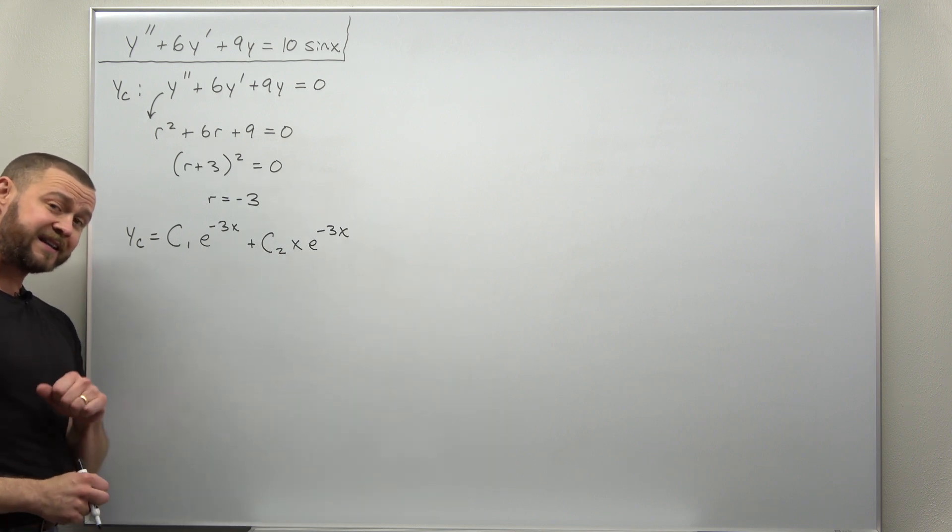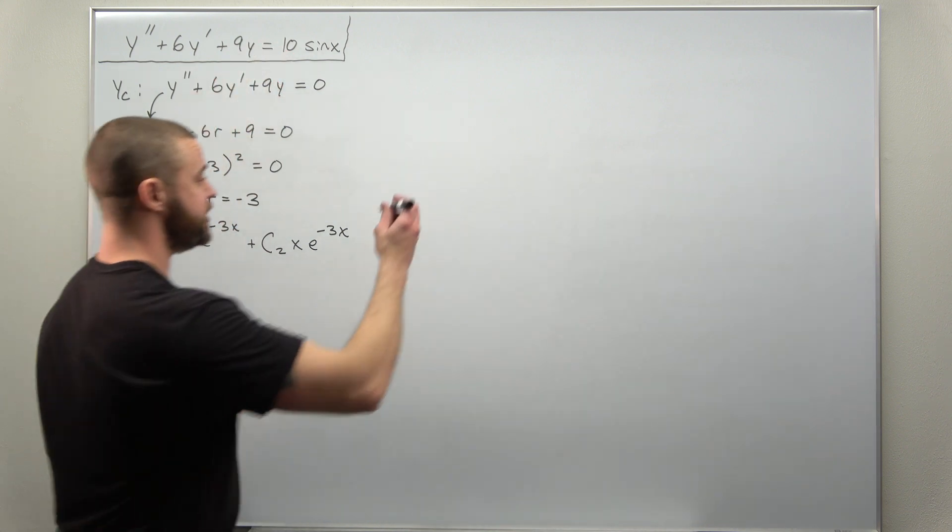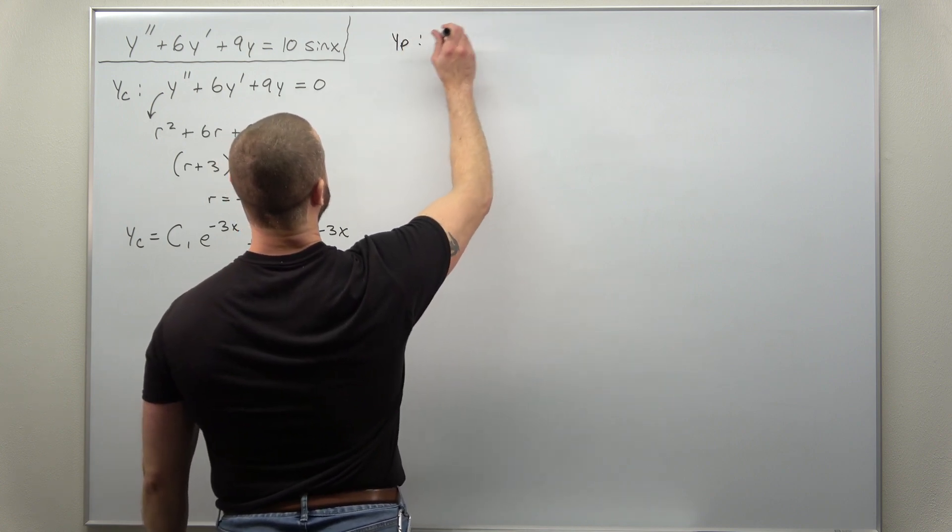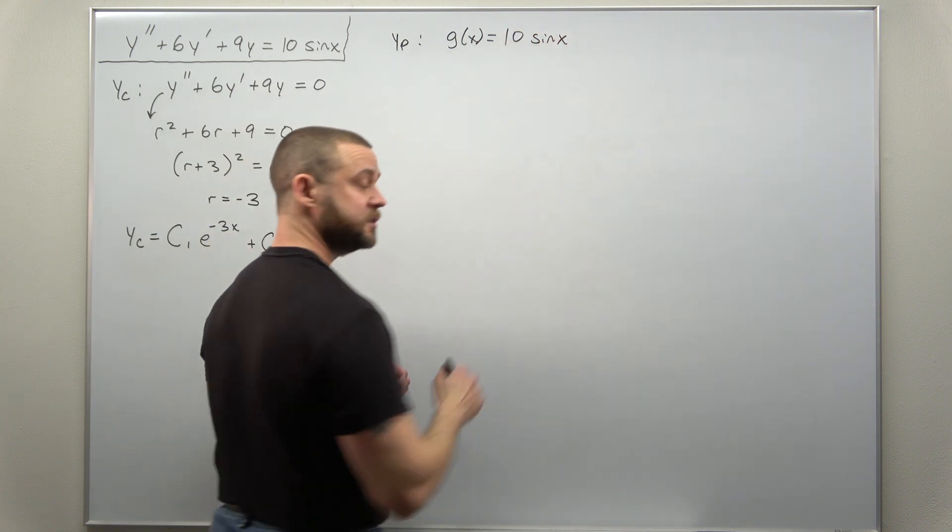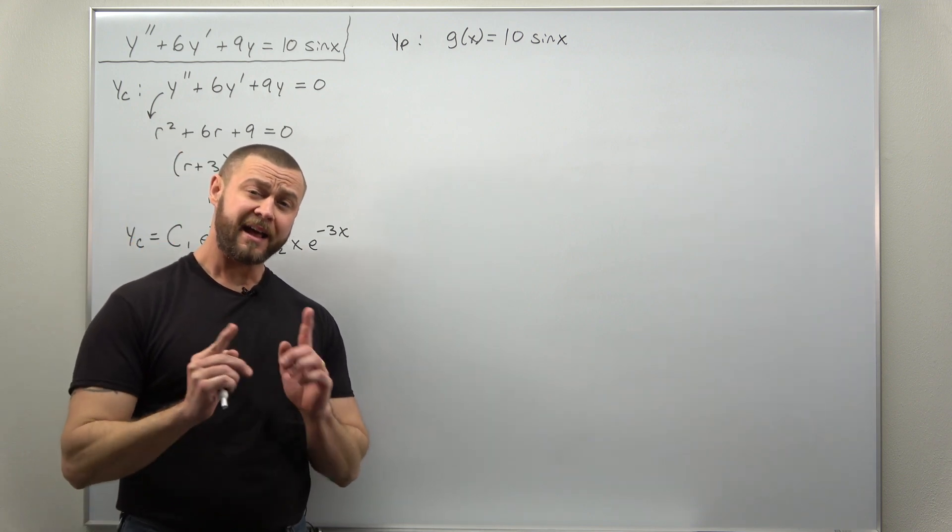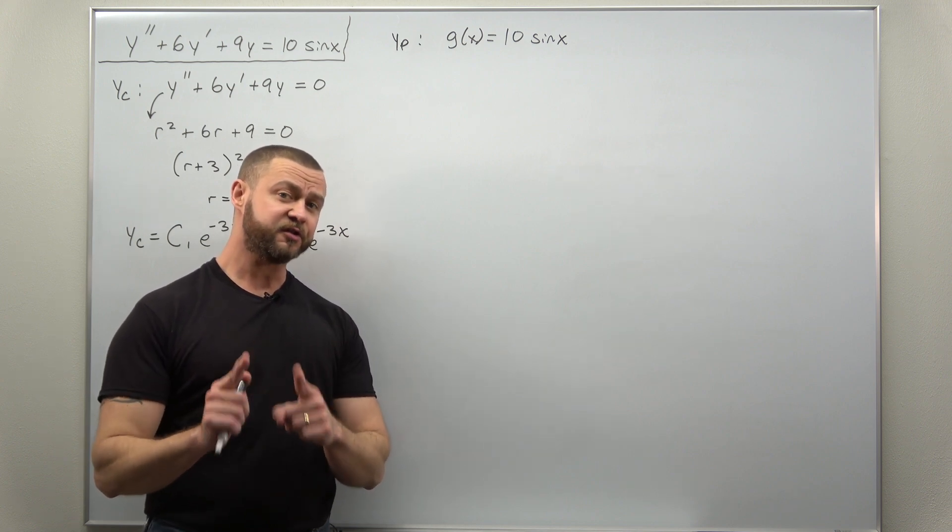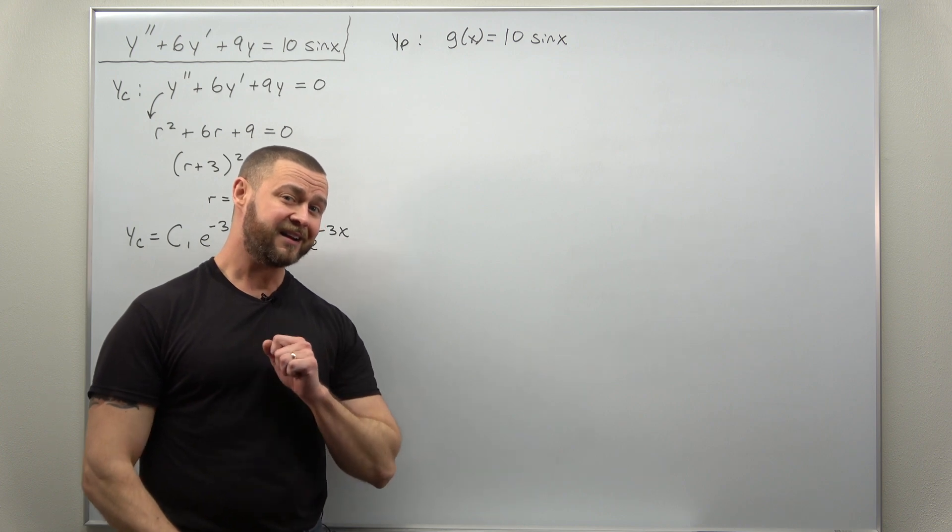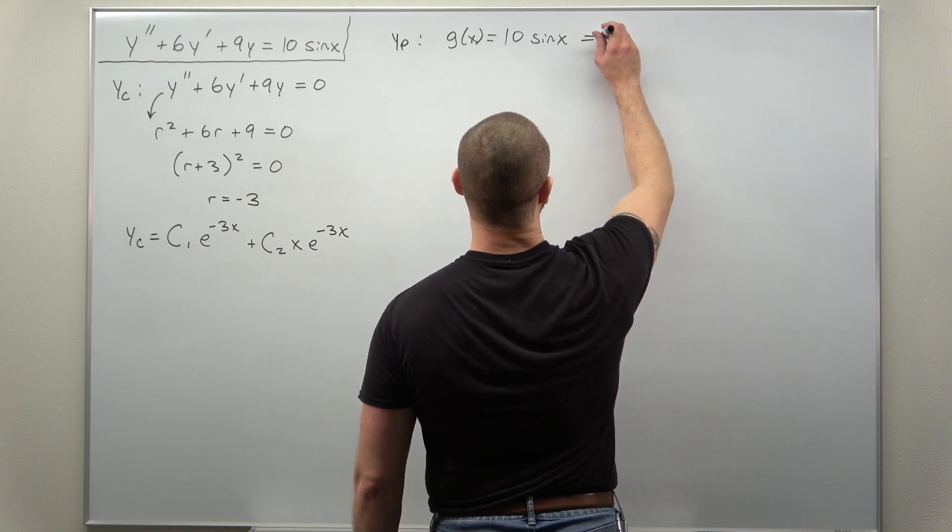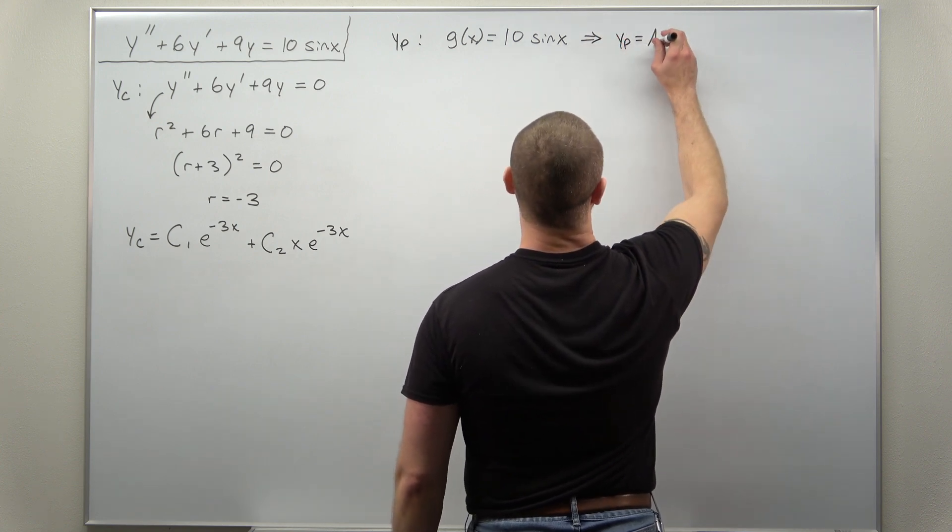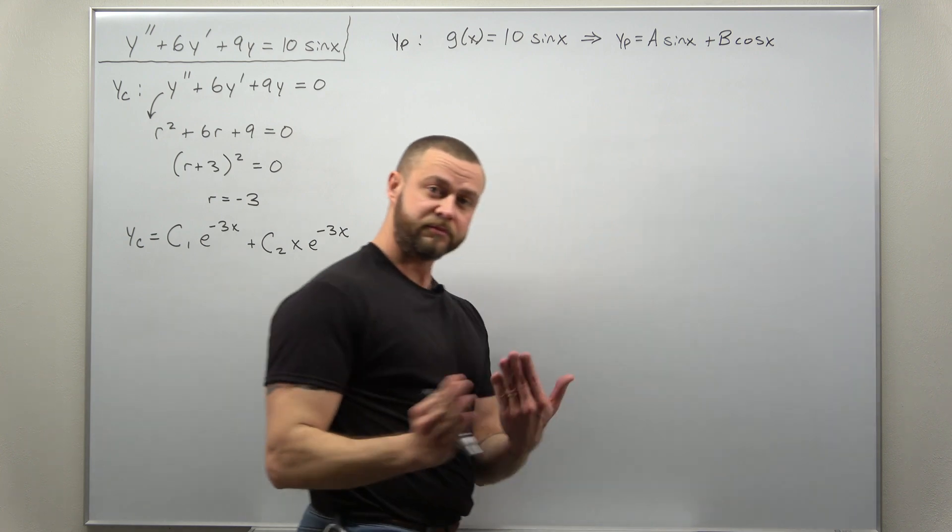We can now move on to finding a particular solution. We do that by looking at the right-hand side which is g of x. So g of x here is 10 sin of x. Since our right-hand side is a sine function, our choice for the particular solution should contain a sine term and a cosine term. So we're going to try here for our particular solution a sine of x plus b times cosine of x.